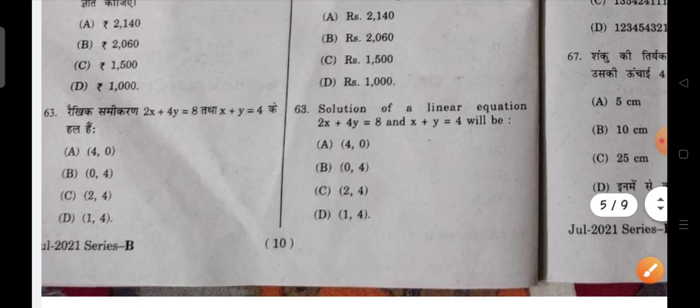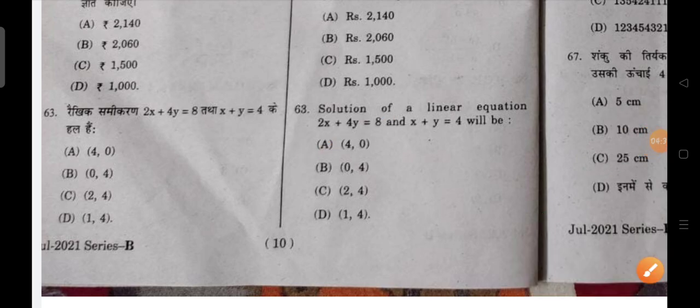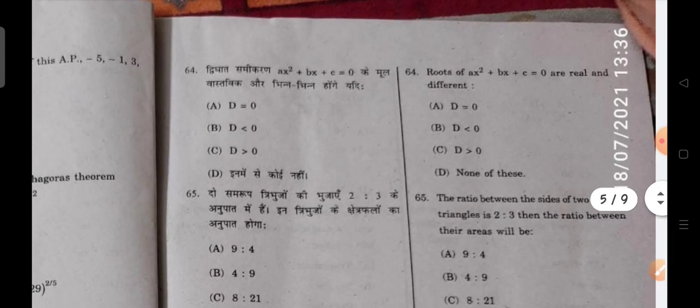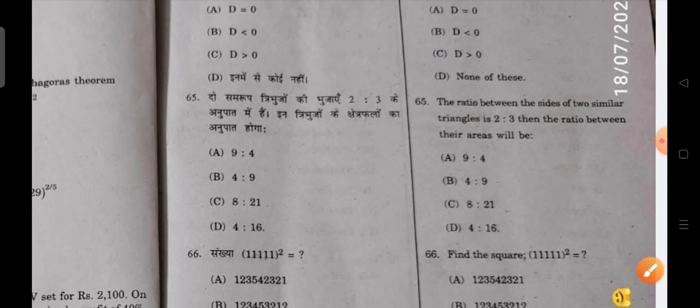Next, you have to solve this linear equation. After solving it, the correct answer will be 4 and 0. Next question is roots of ax square plus bx plus c equals 0. The correct answer is C. Next, the ratio between the sides of two similar triangles is 2 is to 3, and the ratio between their areas is 4 is to 9.